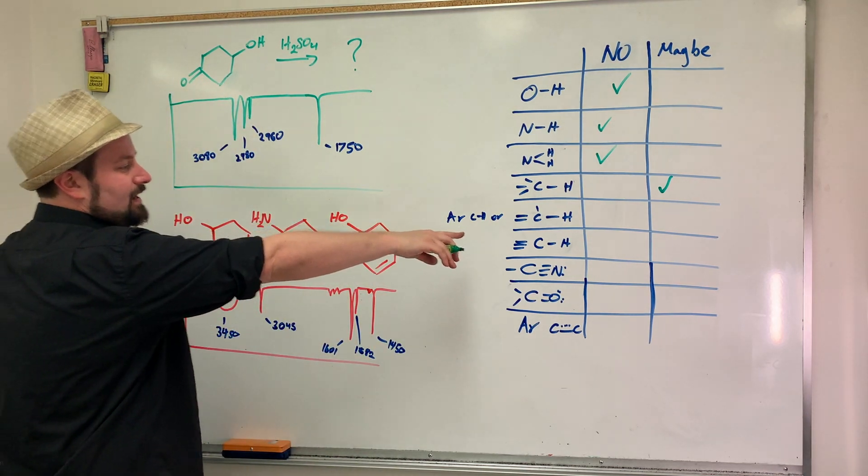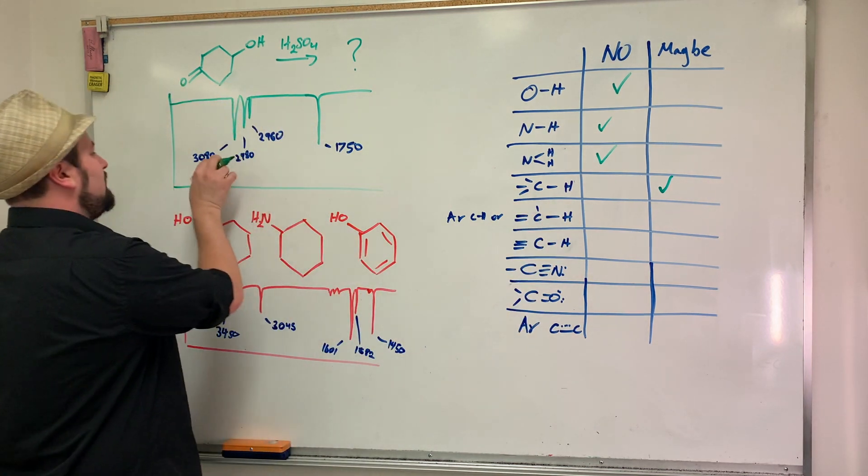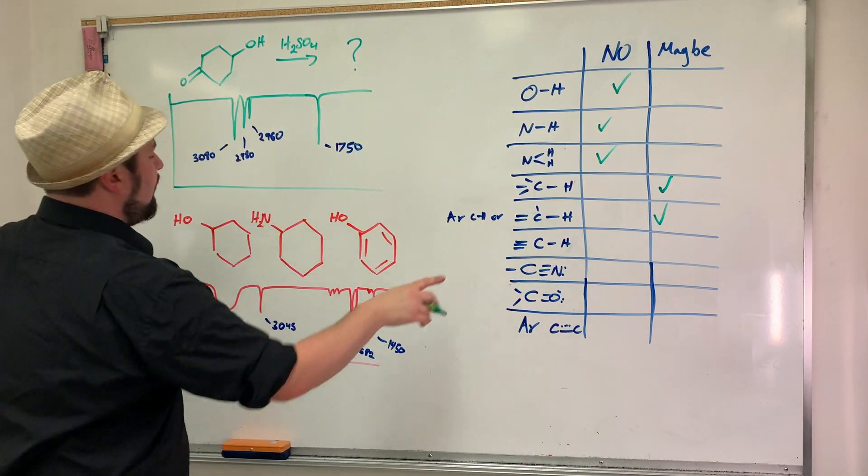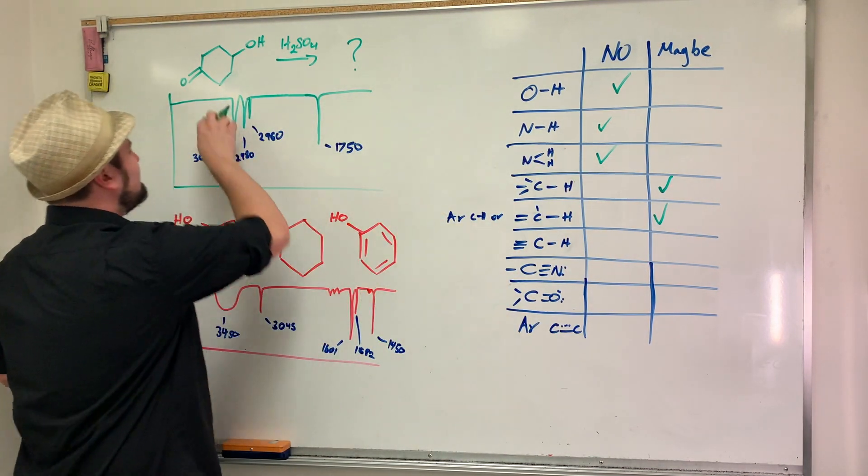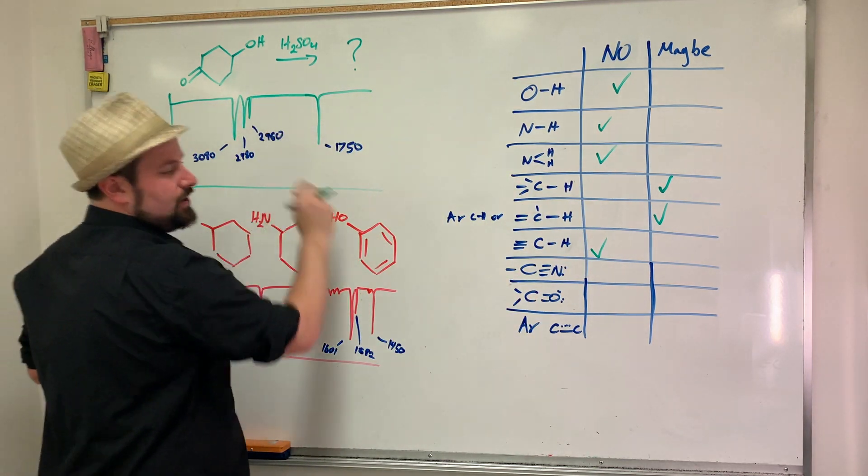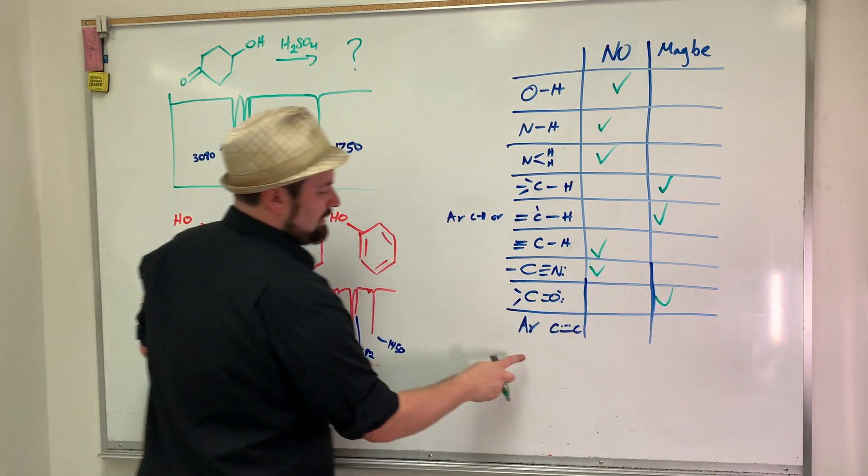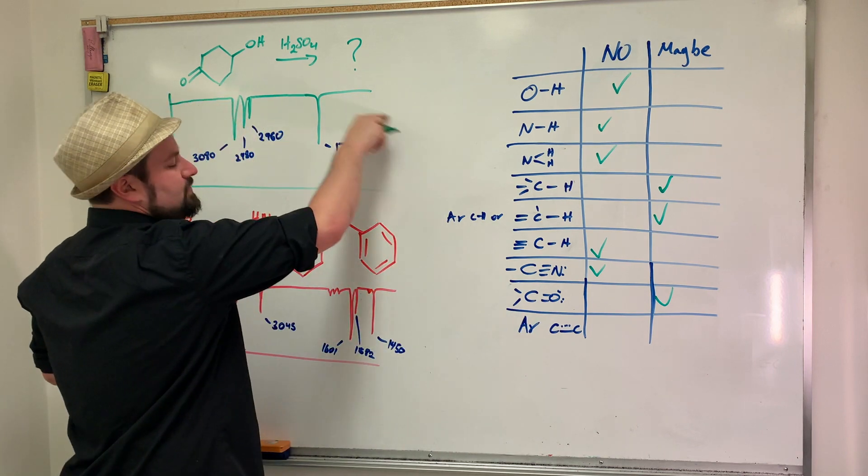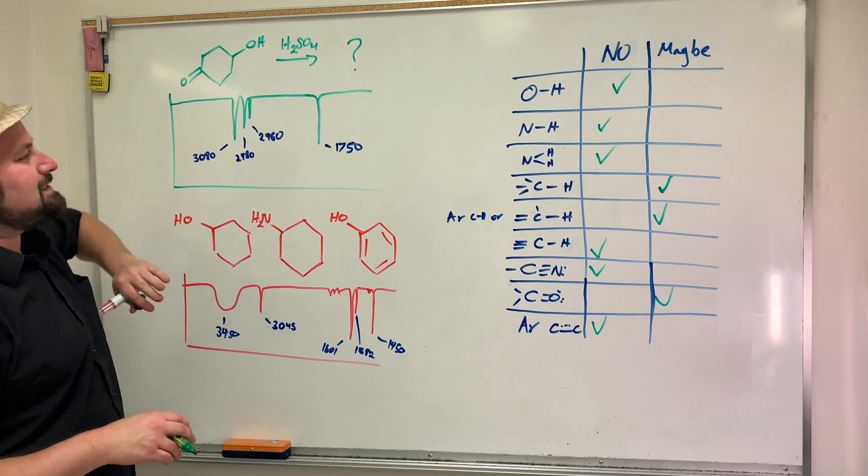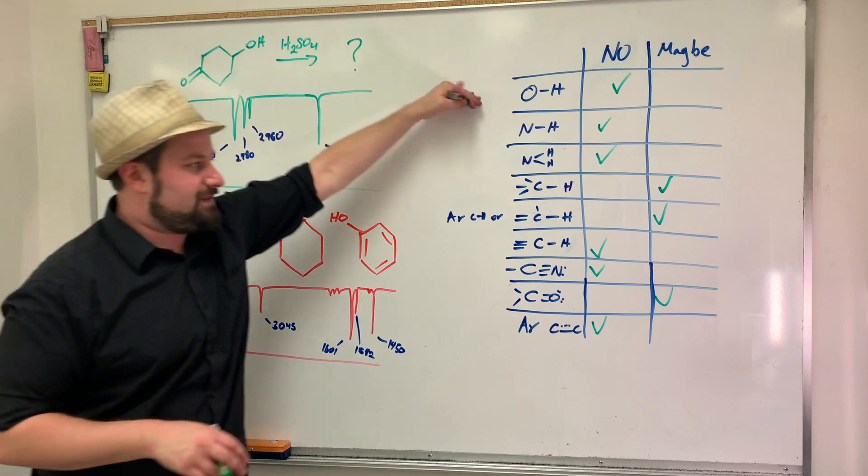Now we're going to look here. Do we have aromatic CHs or, in other words, CH double bonds? And yeah, 3080 is a CH double bond. So there definitely could be a CH double bond. Could there be a triple bond? No, there's nothing there quite low enough to do that. Nitrile? No, nothing there. Can't be a nitrile. Carbonyl? Yeah, that could be a carbonyl. And then CH aromatics? No, nothing there. There's not enough of them. It's not that.